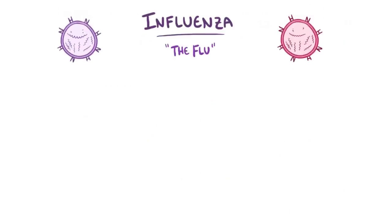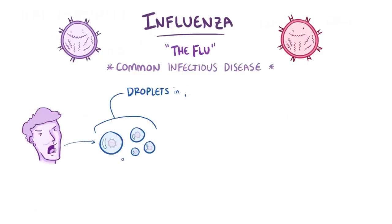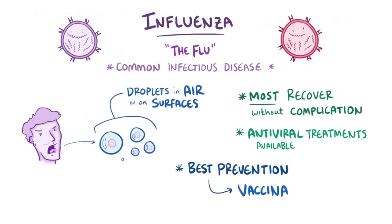As a quick recap, influenza, also known as the flu, is a common infectious disease, and can spread from person to person through tiny droplets in the air or on surfaces. Most people recover from the flu without complications, though sometimes antiviral treatments can be used, and the most effective way to prevent the flu is through seasonal flu vaccination.